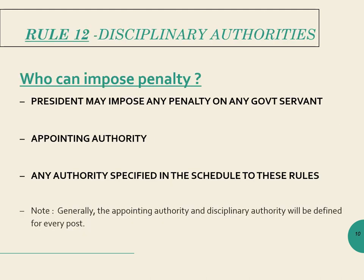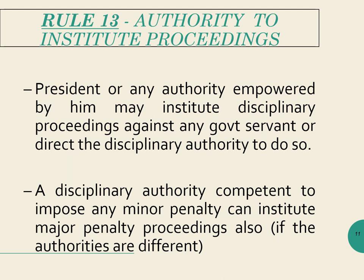Now, who can impose the penalty? Only the President of India, or the appointing authority, or any other specified authority as per delegation of powers — only these officials can impose any penalty after conclusion of disciplinary proceedings. Not everybody is empowered with this power. Rule 13 says the authority to institute disciplinary proceedings is again the same: the President, the appointing authority, or the disciplinary authority only can institute disciplinary proceedings.